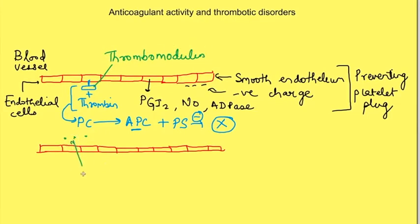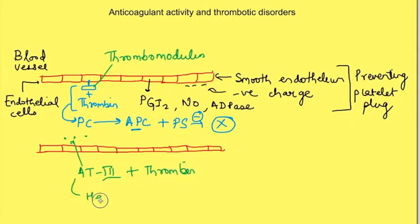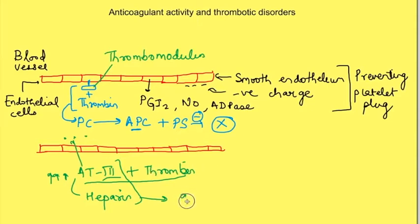There is another protein known as antithrombin 3. Antithrombin 3 has the ability to bind with thrombin and inactivate it. In the presence of heparin, the ability of antithrombin 3 to bind with thrombin increases many folds. Also, the heparin-antithrombin 3 complex has the ability to inactivate some other clotting factors — that is, factors 9, 10, 11, and 12.